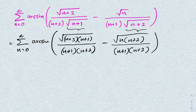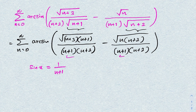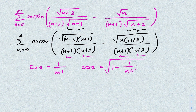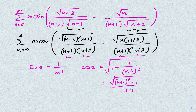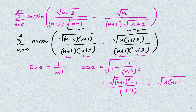Now I'm going to take a substitution: let sin(x) = 1/(n+1), because we have (n+1) and (n+2) appearing in the expression. We can find cos(x): we know cos(x) = sqrt(1 - sin²(x)) = sqrt(1 - 1/(n+1)²). Simplifying, we get sqrt((n+1)² - 1) / (n+1), which gives sqrt(n² + 2n) / (n+1) = sqrt(n(n+2)) / (n+1).